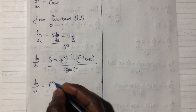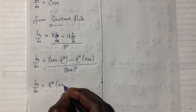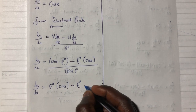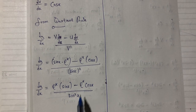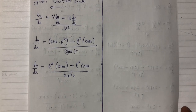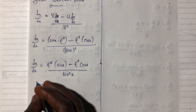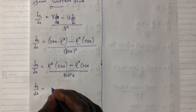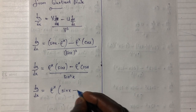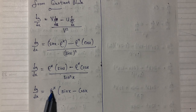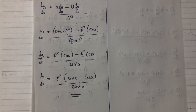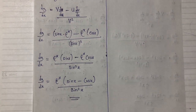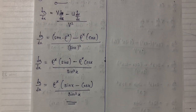Since e^x is common, I factorize: dy/dx equals e^x times (sin x minus cos x), all over sin²(x). This is our final answer. This is the end of the video on the quotient rule. If this video was helpful, kindly subscribe to this channel. My name is Daniel — meet you in my next video.